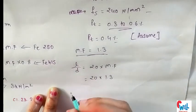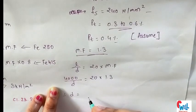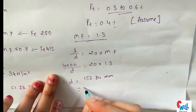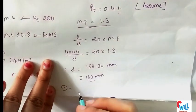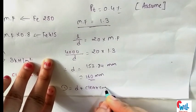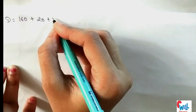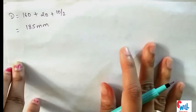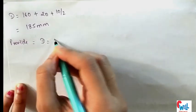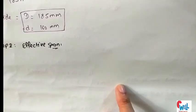With PT = 0.4% and FS = 240 N/mm², the modification factor is 1.3, giving L/D = 20 × 1.3 = 26. Taking the clear shorter span of 4000 mm, effective depth D = 153.84 mm, rounded up to 160 mm. Total depth = effective depth + clear cover + bar diameter/2 = 160 + 20 + 10/2 = 185 mm. So we provide total depth D = 185 mm and effective depth d = 160 mm.